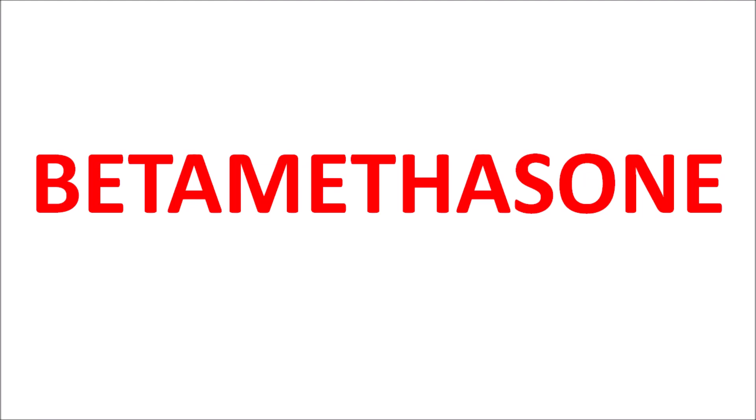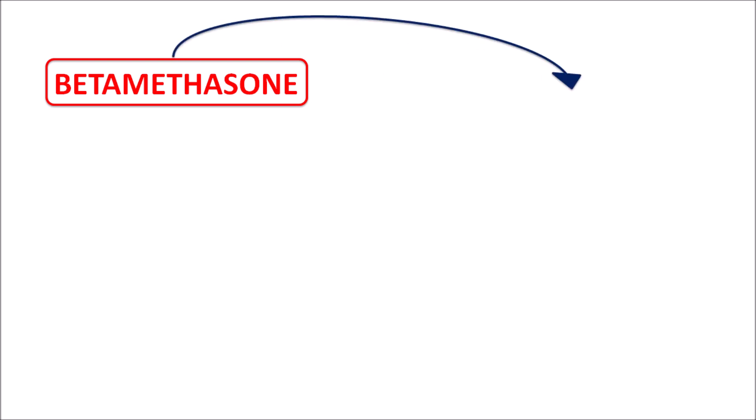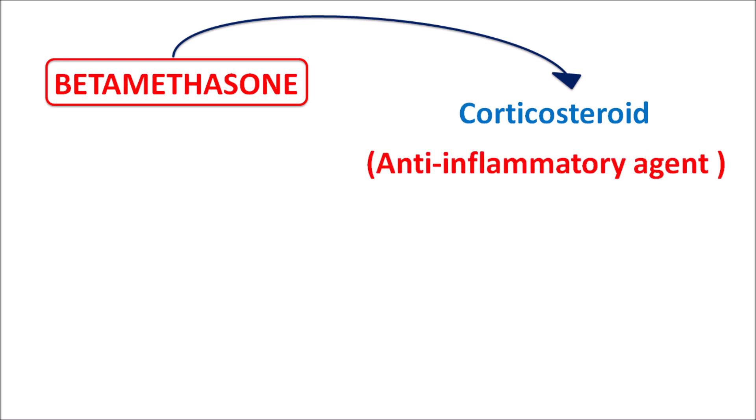Today we discuss betamethasone. The suffix '-sone' indicates this drug is a corticosteroid, and corticosteroids have anti-inflammatory activity. So betamethasone acts as an anti-inflammatory agent. This drug is also having immunosuppressant activities, but being a corticosteroid, betamethasone is particularly used as an anti-inflammatory agent.